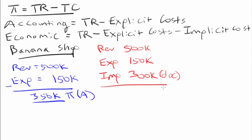So in this case, $500,000 minus $150,000 minus $300,000 is actually $50,000. So the economist would say this banana shop opportunity really is just okay of an opportunity because you're actually only profiting a $50,000 difference.